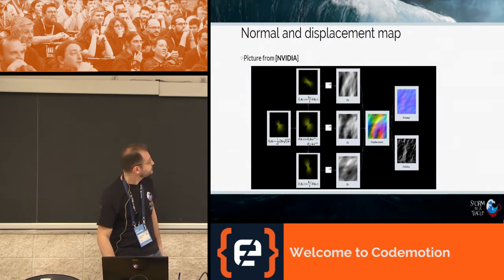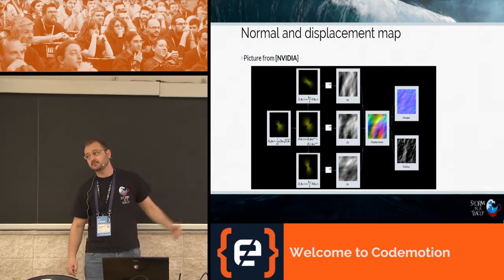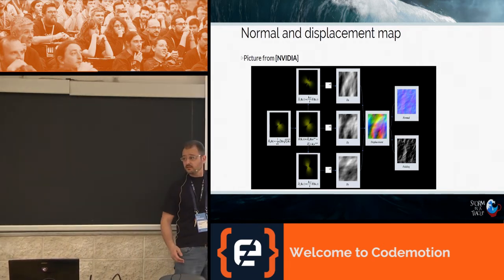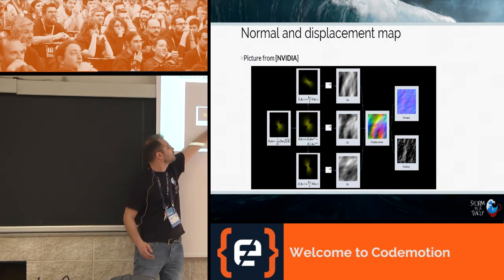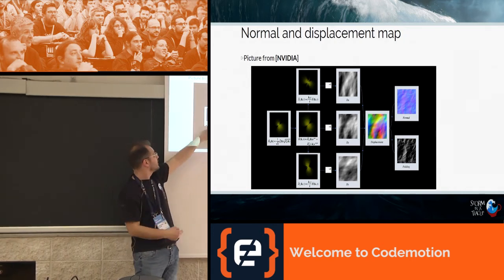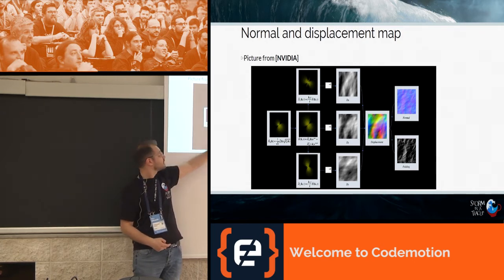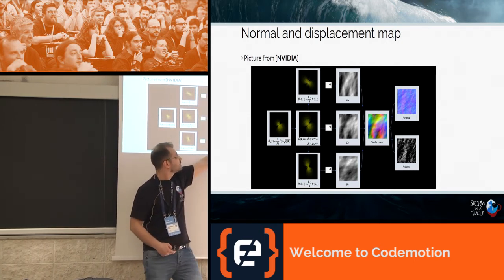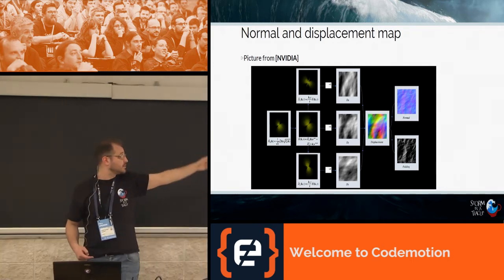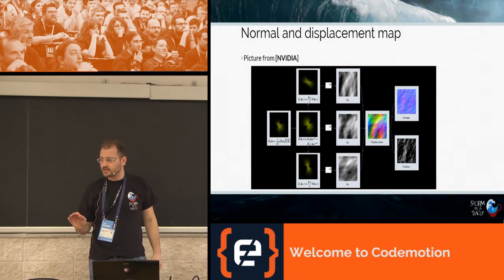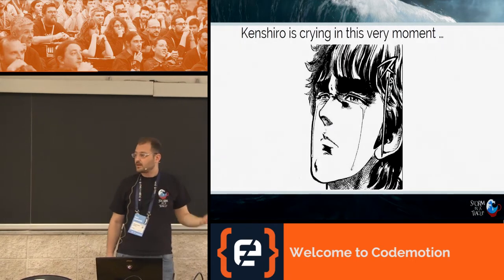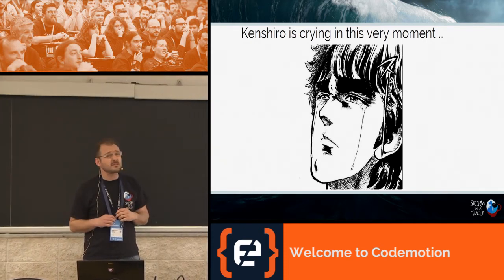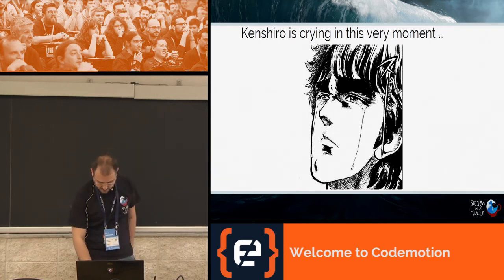This picture from NVIDIA shows the full pipeline more explicitly: the spectrum H₀ feeds into three separate spectra, then inverse Fourier transforms produce the height (DY), the horizontal displacements (DZ, DX), the normal map, and the folding map below — which I'll explain in a moment.